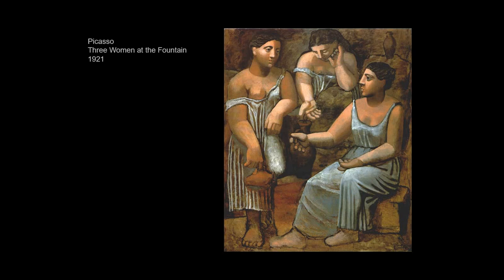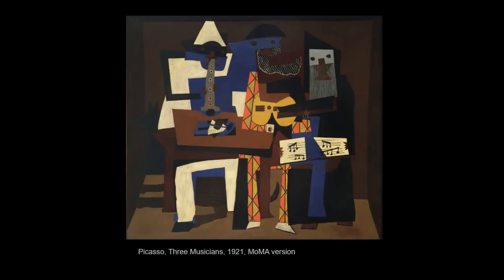Picasso starts creating more neoclassical work, looking to classical traditions, saying maybe we need to pull back from these youthful indiscretions. But it's ultimately unsatisfying. Picasso is the only person who really sticks with the Cubist style much longer after World War I. Surrealism comes along and offers so many more opportunities, and Picasso for his part kind of blends into Surrealism.